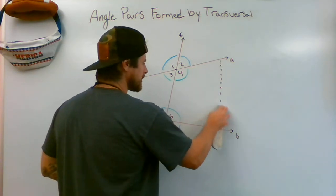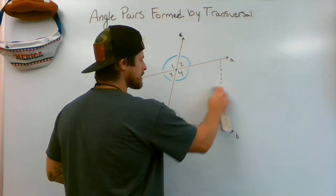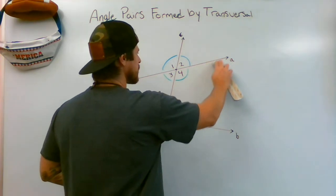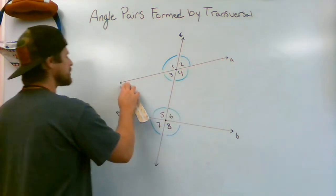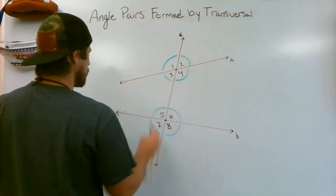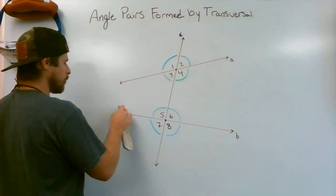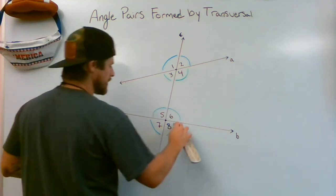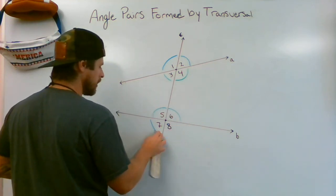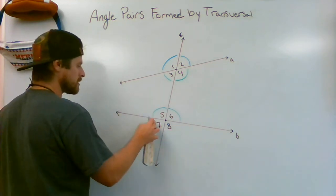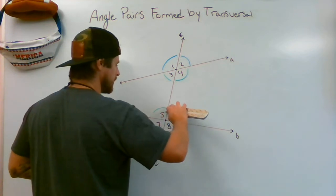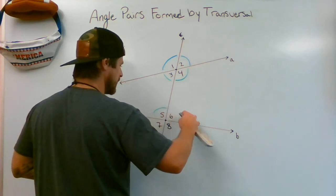Now that we have an understanding of interior and exterior angles — because those words are going to come into play when we start talking about angle pairs — we want to look at what we mean by 'alternate.' Alternate means to switch, and alternate interior angles means to switch sides of the transversal.